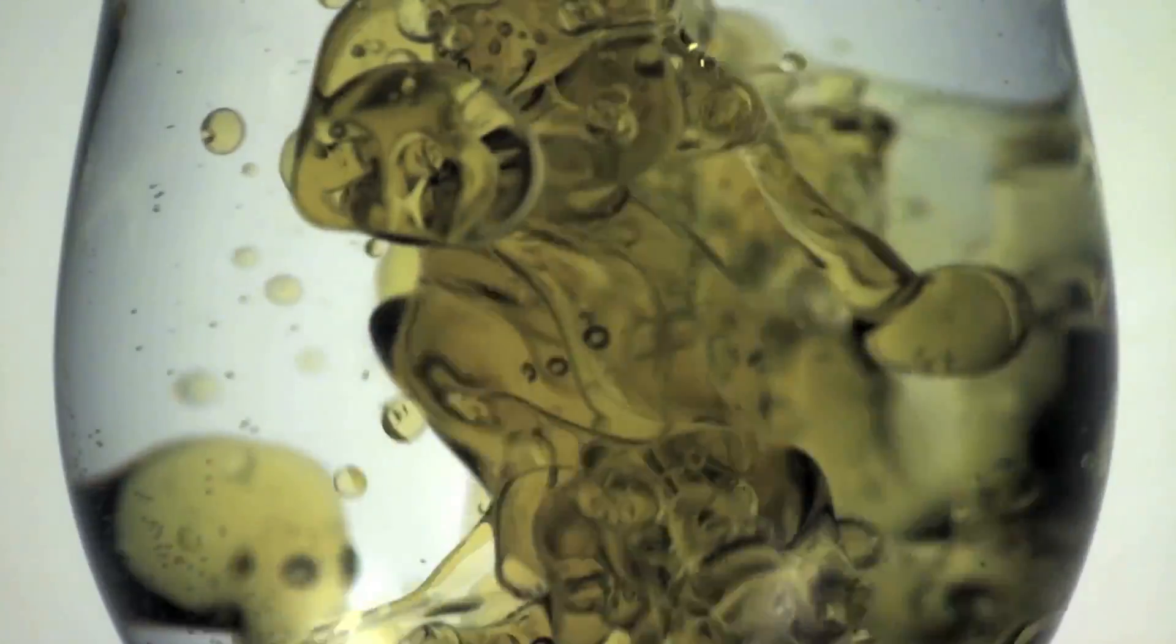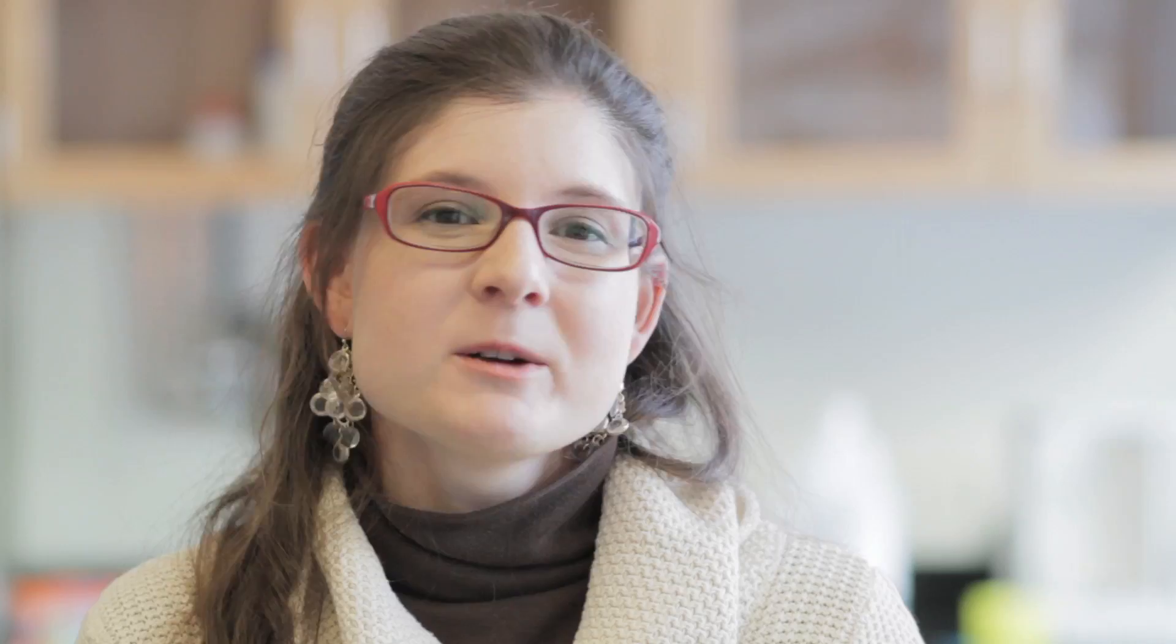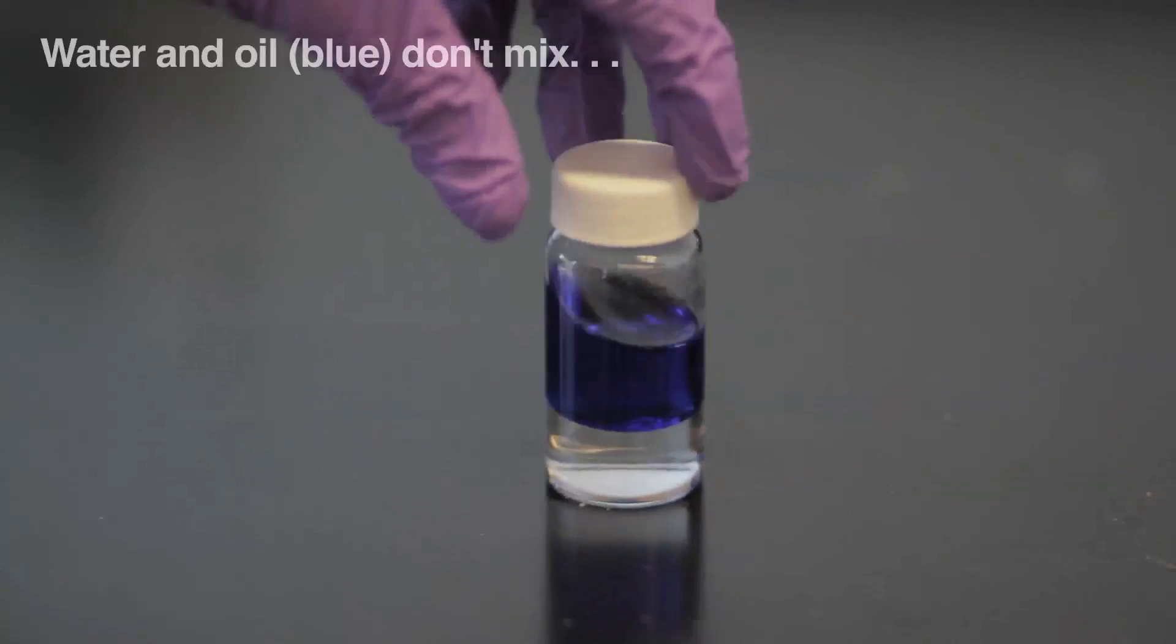An emulsion is a mixture of two immiscible fluids like oil and water. So a simple emulsion of oil and water might be droplets of an oil dispersed in water or droplets of water dispersed in oil. Like your salad dressing would be an emulsion that people might come into contact with day to day.